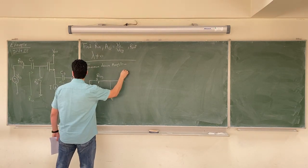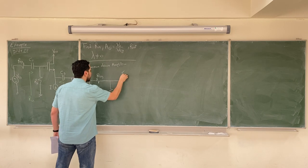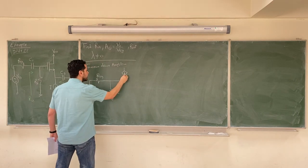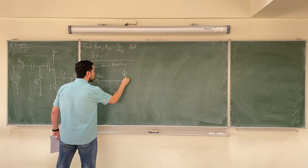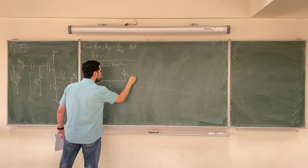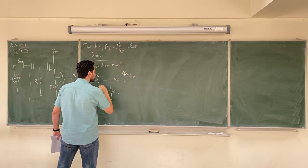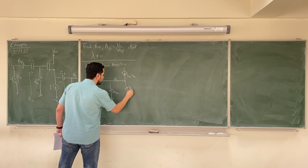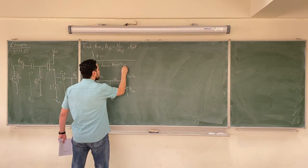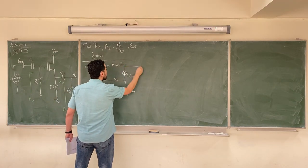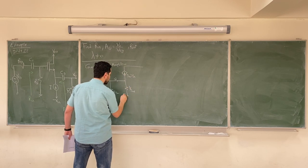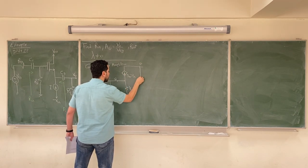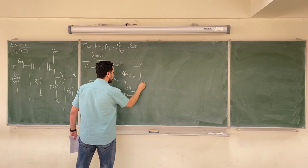Then we have here a dependent source GM·VGS, where this is the gate G, and we have here a resistor 1/GM, and then this is the source. Between the drain and the source there is also a resistance RO.